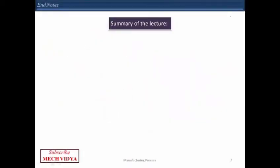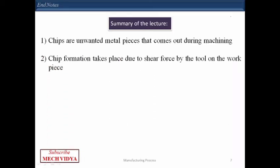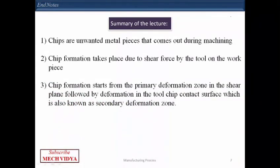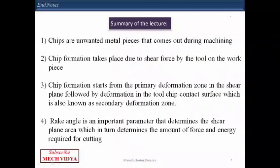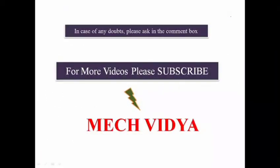Now that we have reached the end of this lecture, let us summarize what we learned. First, chips are unwanted metallic pieces that come out during machining. Second, chip formation takes place due to shear force by the tool on the workpiece. Third, chip formation starts from the primary deformation zone in the shear plane, followed by deformation in the tool-chip contact surface where tremendous friction is generated, known as the secondary deformation zone. Finally, rake angle is a very important parameter that determines the shear plane area, which in turn determines the force and energy required for cutting. If you have any doubts, please feel free to ask in the comment box, and for more videos please subscribe. Thank you.